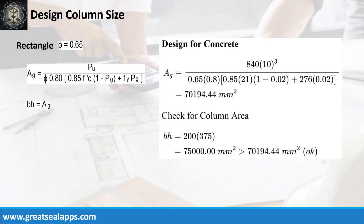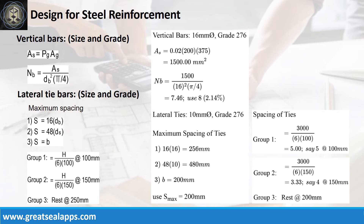Given a factored actual load of 840 kN and steel ratio of 2%, the gross area of section is 70,194.44 square millimeters, for a column width of 200 millimeters and column length of 375 millimeters. Given steel ratio of 2%, width of 200 mm, and length of 375 mm, the area of steel is 1,500 square millimeters. The number of vertical bars for a 16 mm bar is 8.